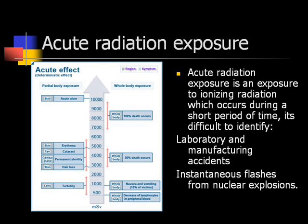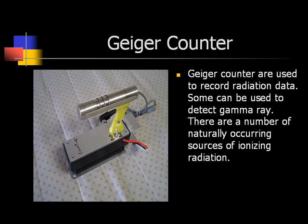Acute radiation exposure. Acute radiation exposure is an exposure to ionizing radiation which occurs during a short period of time. Examples include laboratory and manufacturing accidents, and instantaneous flashes from nuclear explosions.